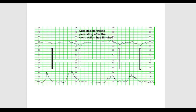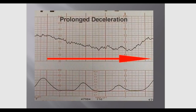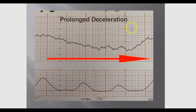A late deceleration does not have to be a large drop. What matters is where it falls in the contraction cycle — the nadir is occurring in the resting phase. This indicates the baby is not being adequately perfused, pointing to uteroplacental insufficiency. A prolonged deceleration is where the baby's heart rate is down for a significant period of time — in this example, approximately five to six minutes before recovery begins.